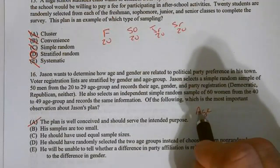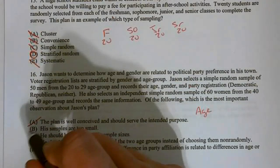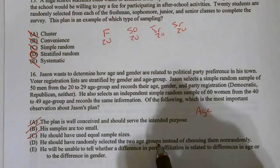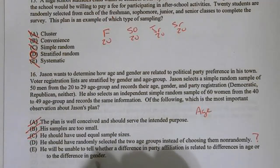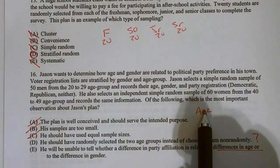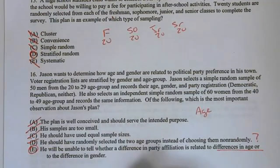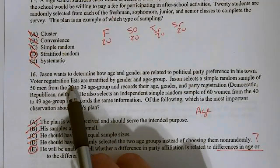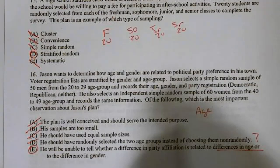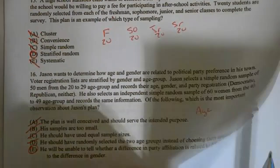The plan is well-conceived. I don't think so. Because he's trying to determine how age and gender are related. And it's like, nope, we don't have both types of ages with women. We don't have both types of ages with men. The samples are too small? No, not really. You should have used equal sample sizes. Certainly not necessary. He will be unable to tell whether a difference in party affiliation is related to differences in age or gender. And that's because age and gender are confounded because he only selected women of one age and men of one age. So, E is my correct response. You should have chosen some men from the 20 to 29 age group and some men in the 40 to 49 age group. And he should have selected some women in the 20 to 29 and some women in the 40 to 49. And he did not do that. He confounded them.